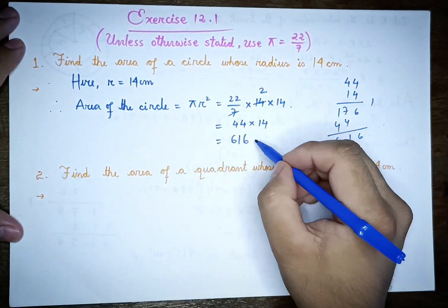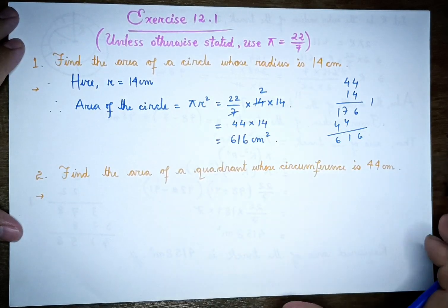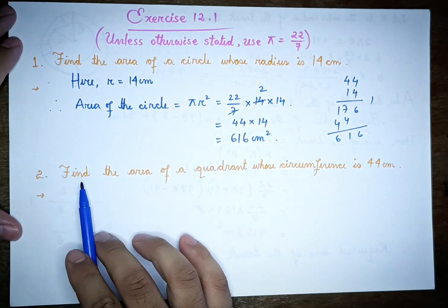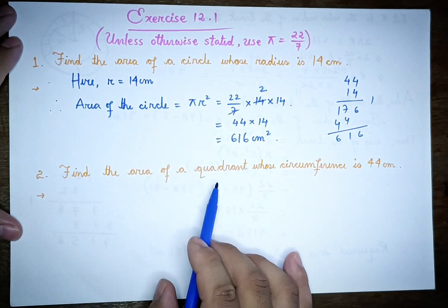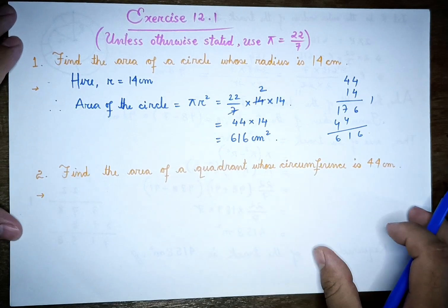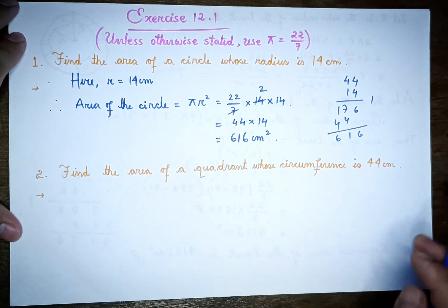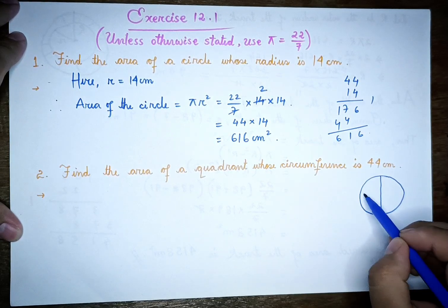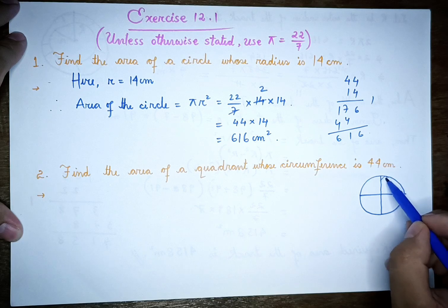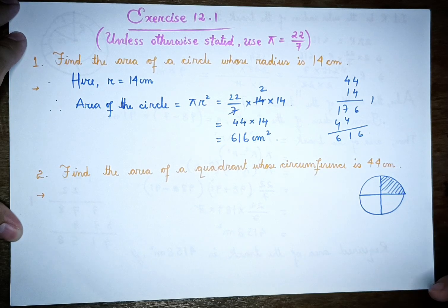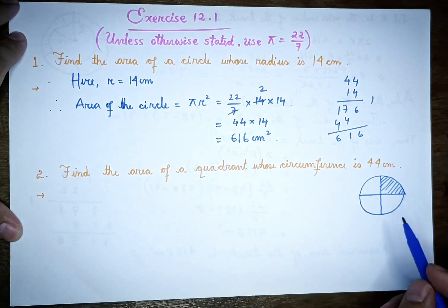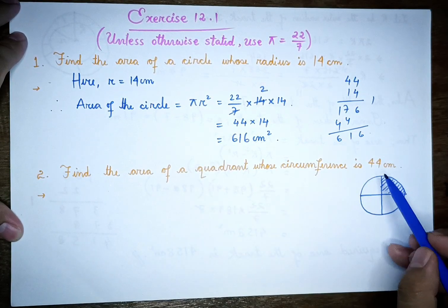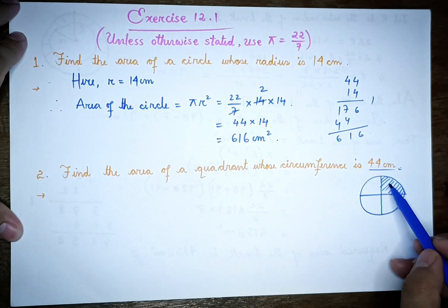The area of the circle is 616 square cm. Question 2 says: find the area of a quadrant whose circumference is 44 cm. We will look at the circle — a quadrant is one quarter part of the circle.